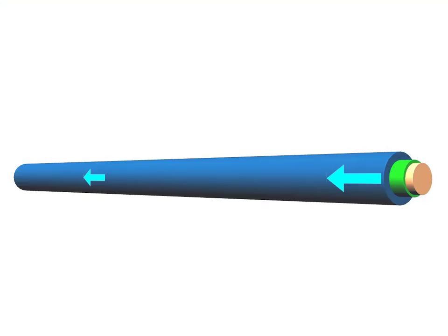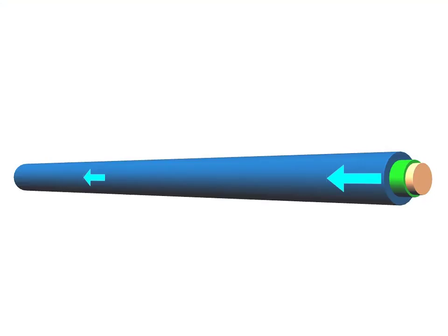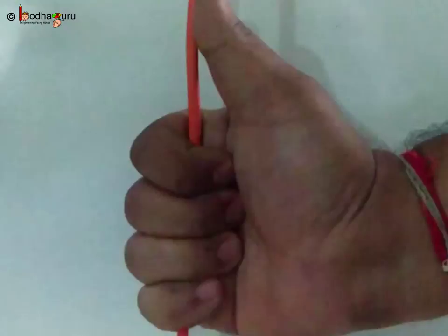Now, imagine this rod as a current carrying conductor and current is flowing from right to left. What would be the direction of magnetic field?